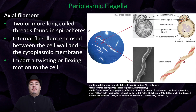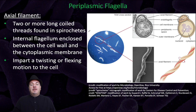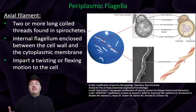We can also have periplasmic flagella, which involves an axial filament — two or more long coiled threads found in spirochetes. It's an internal flagellum enclosed between the cell wall and the cytoplasmic membrane, and it imparts a twisting or flexing motion to the cell.